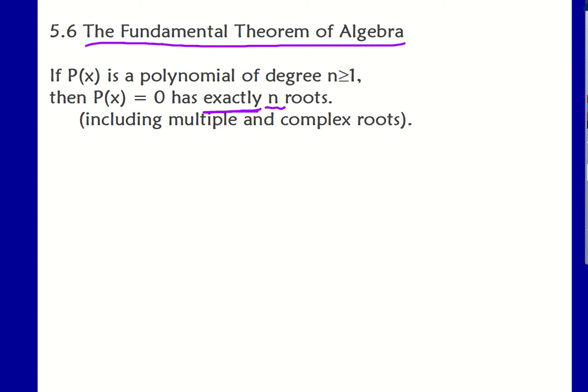So what this means is that if I have a fourth-degree polynomial, there will be four roots. If I have a sixth-degree polynomial, there will be six roots. Some of them might be the same root twice, or some of them might be complex, or some of them might be irrational. We can have all kinds of roots, but we will have exactly as many roots as the degree of the polynomial.